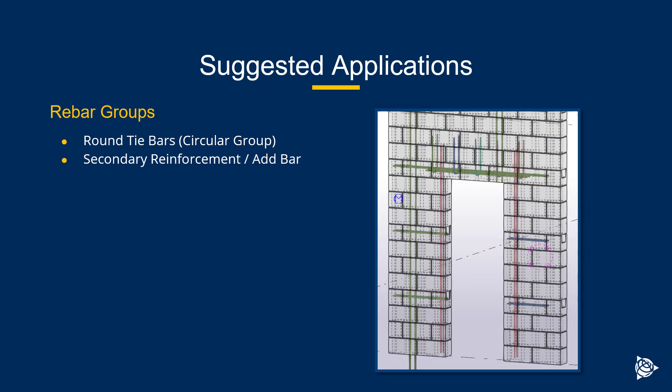A really great place for groups is secondary reinforcement or additional bar, especially if it needs to be somewhat independent of the overall geometry of the concrete, or if you're doing something like masonry. You are able to add groups or single bars to provide that additional reinforcement — just make sure to name it appropriately so that you can filter it out pretty easily.